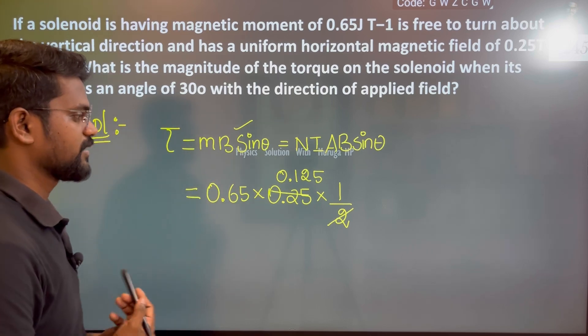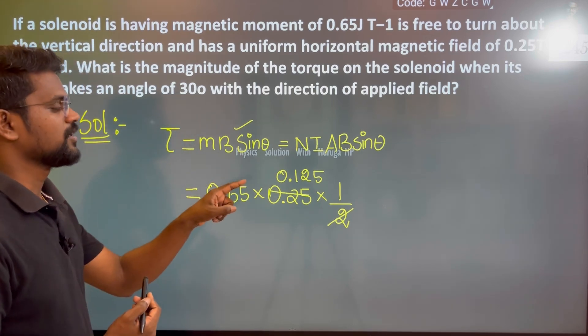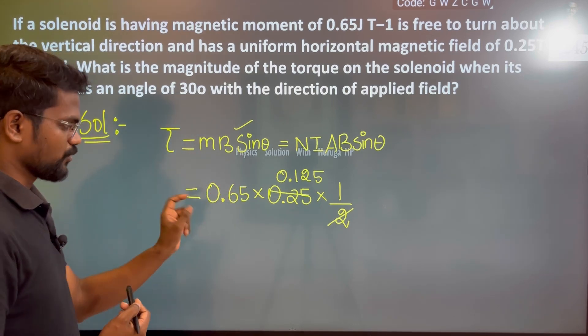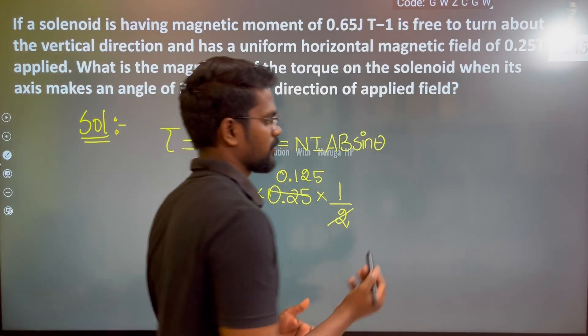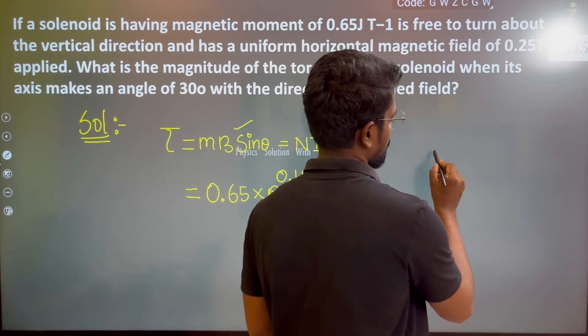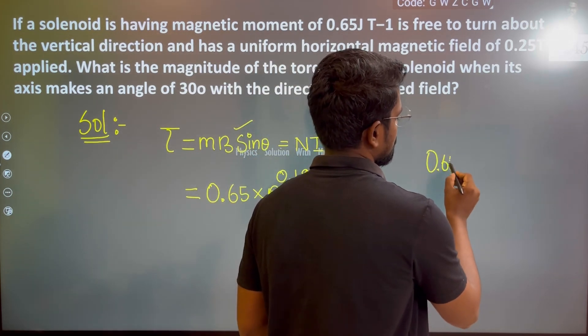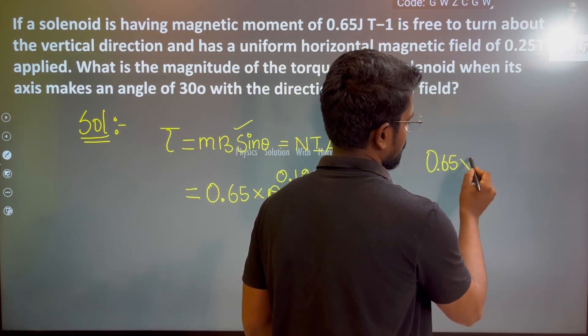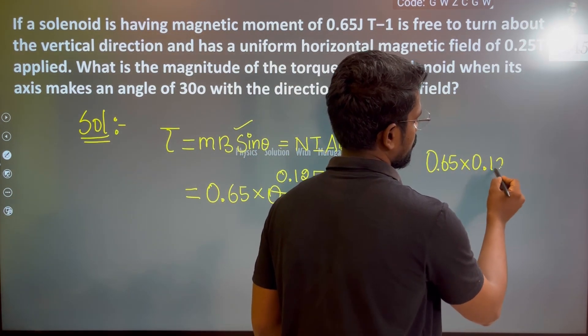It is the result. Now 0.125 multiplied by 0.65 — so obviously 0.65 into 0.125.